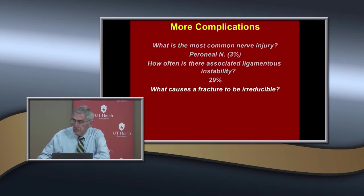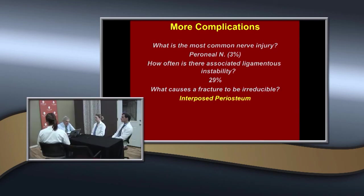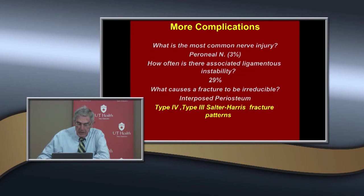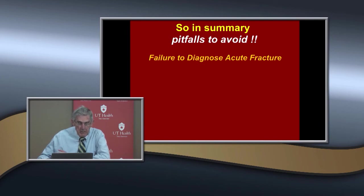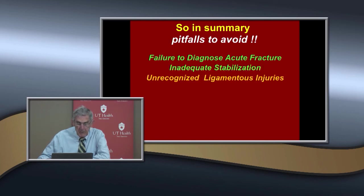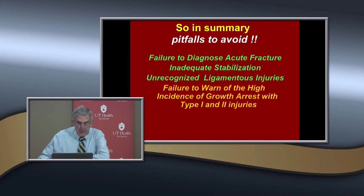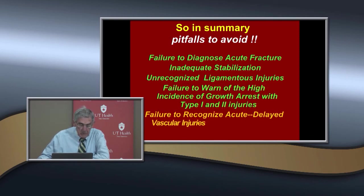Some fractures become irreducible — usually due to interposed periosteum, which most commonly occurs in Salter-Harris type 3 and type 4 fracture patterns, often requiring open reduction. In summary, pitfalls to avoid: failure to diagnose acute fracture despite negative x-rays (look at soft tissues, fat pad signs, use CT or MRI), inadequate stabilization (a cast will not hold), unrecognized ligamentous injuries, and failure to warn parents about the high growth arrest risk even with type 1 or 2 injuries. Watch closely for acute and delayed vascular injuries.